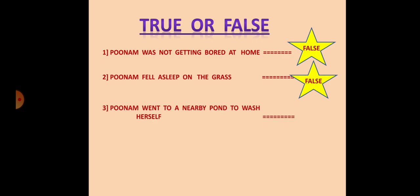The third one: Poonam went to a nearby pond to wash herself. Is it right? Yes, it is true. The fourth one: we find some animals living in our houses also. Have you seen very small tiny animals? Yes, it is true. Let us go to the next one.